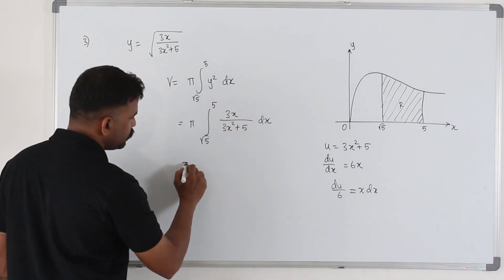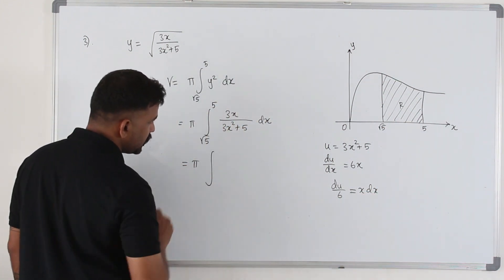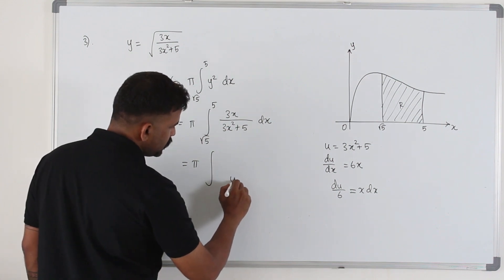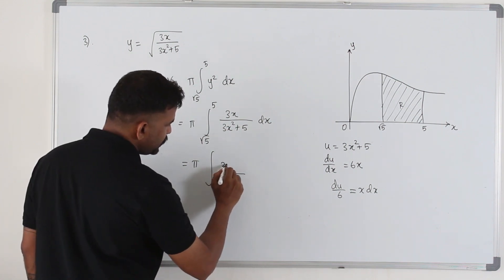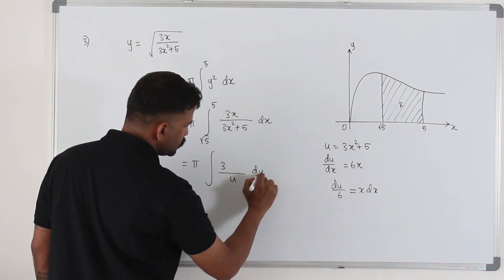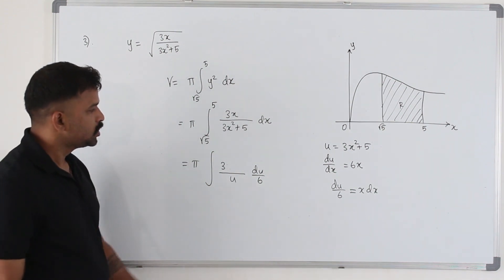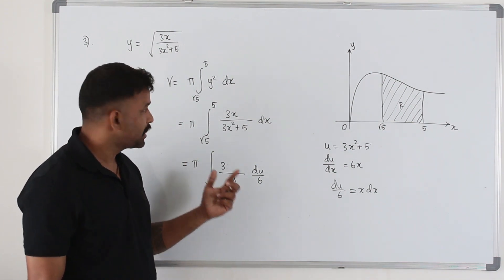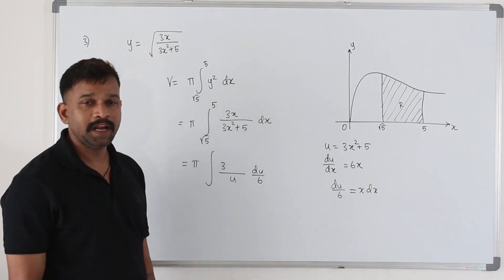So basically du over 6 is x dx. So I'm going to replace everything in terms of u here. Integral—this denominator is u, 3 times x dx is du over 6. So whenever you convert this, you can convert the limits also. That would be a lot easier.